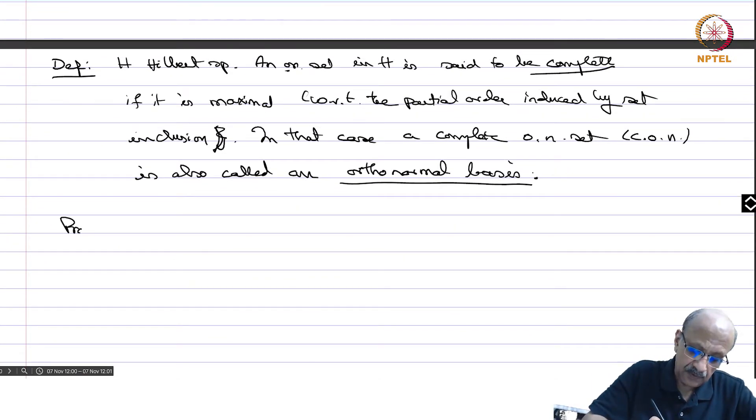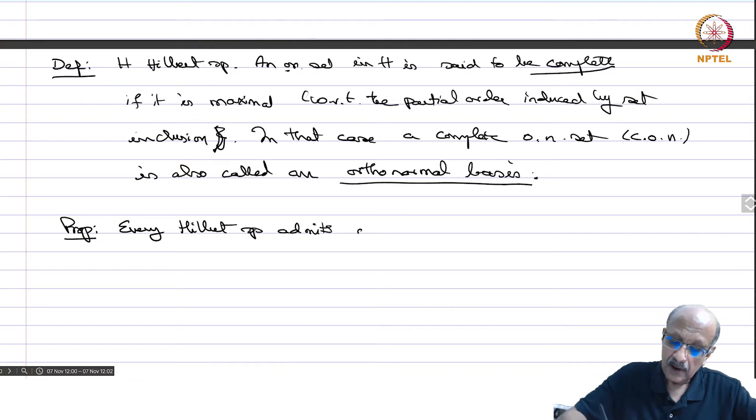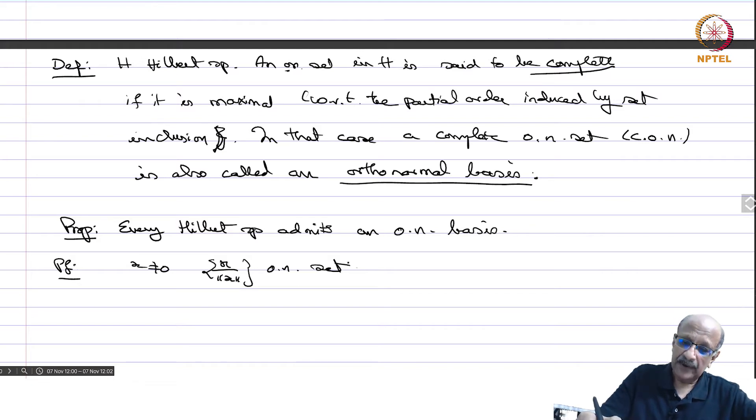Proposition: every Hilbert space admits an orthonormal basis. Proof. We do have orthonormal sets. In fact, if you have any x not equal to 0, then you have x by norm x is an orthonormal set. And then if you are given any linearly independent thing, the Gram-Schmidt process gives you an orthonormal set. So we have a lot of orthonormal sets.